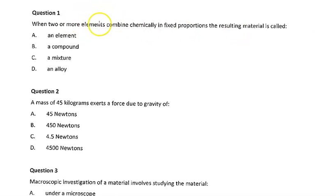So I'll go on to question one. When we combine two or more elements chemically in a fixed ratio, that is called a compound. The mass of 45 kilograms under gravity, assuming that we're on Earth, gravity is 9.8 meters per second squared. Some people will say 9.81, or 9.806. We're allowed in engineering just to use 10 as our value for gravity. So we can take 45 multiplied by 10 gives 450 newtons.